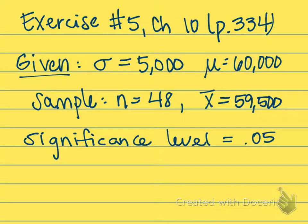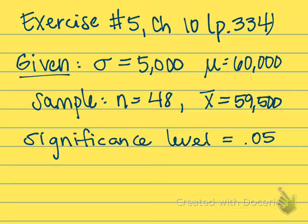Traditionally I try to work out examples where you guys were not given the answers, which are the even numbers. But there was not a two-tailed example in this chapter that was an even number, so I just picked this one. We've got a manufacturer of some truck tires and they claim that the mean mileage that the tire can be driven before your tread is going to run out is found to be 60,000.